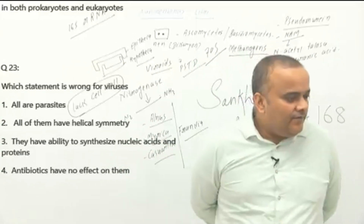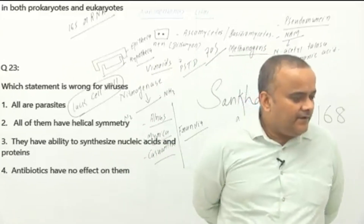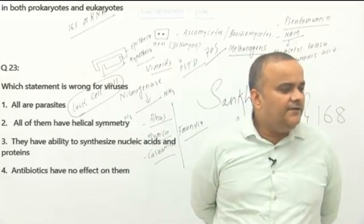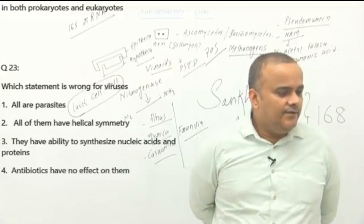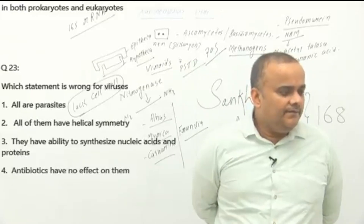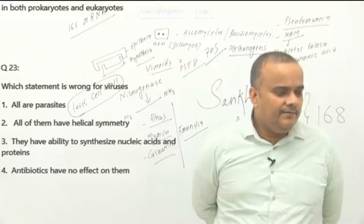Which statement is wrong for virus? First: all are parasites — true. Second: all of them have a helical symmetry — this is not true; they can be polyhedral or have other geometrical shapes. So the answer will be second option.